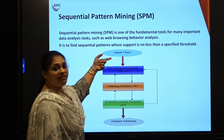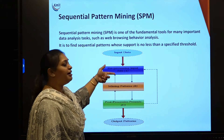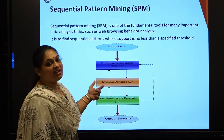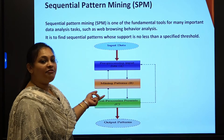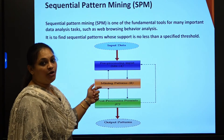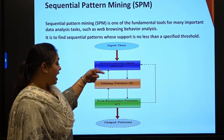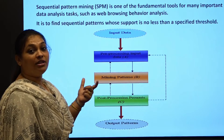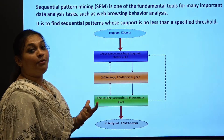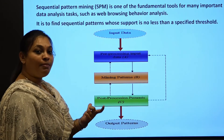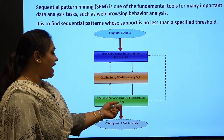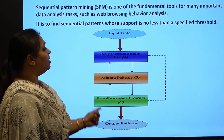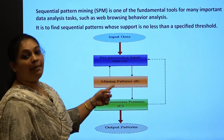In the sequential pattern process, first you provide input data. Without data, you cannot do pre-processing. Without pre-processing, you cannot proceed to the mining patterns — which include Apriori and FP Growth. After mining, you perform post-processing based on the association rule mining results, and from that you generate the output. This is your sequential pattern.